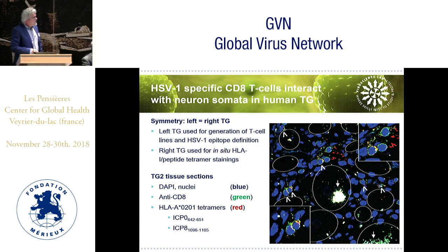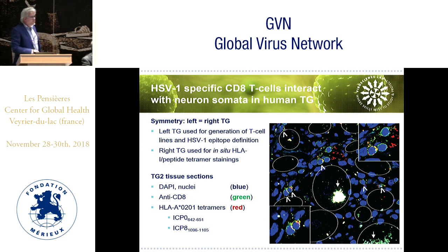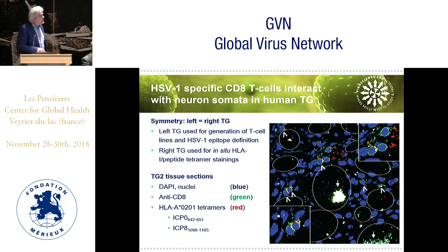We wanted to not just identify these T cells but localize them. Using in-situ tetramer staining — shown in green and red — we can visualize where antigen-specific T cells are located within the tissue. The surroundings of the neuronal somata are shown, and indeed these T cells are interacting directly with neurons from the same donor, strengthening our idea that they are involved in controlling latency.